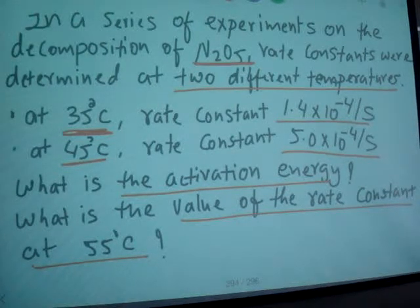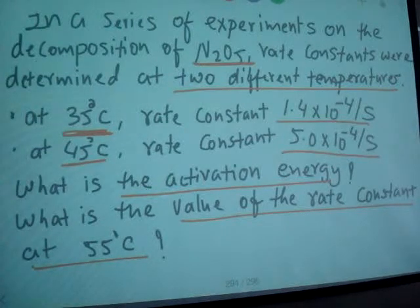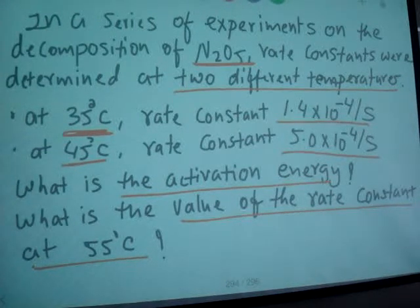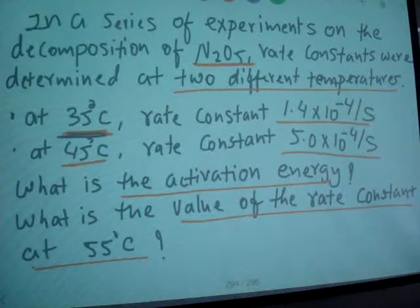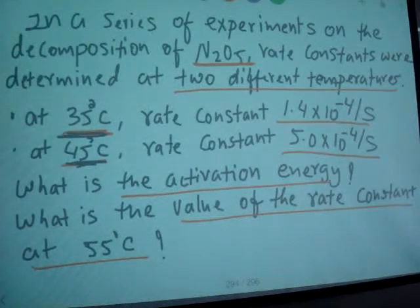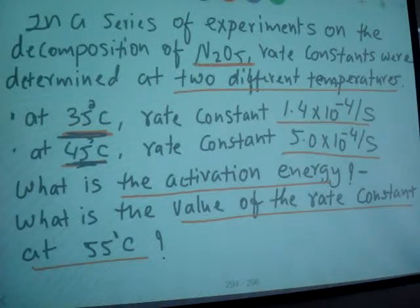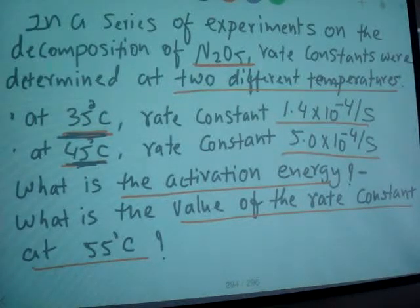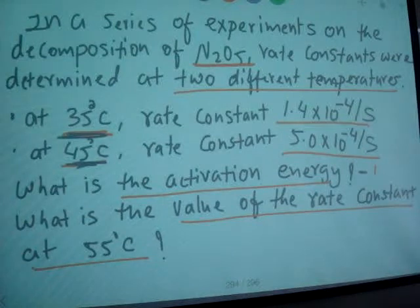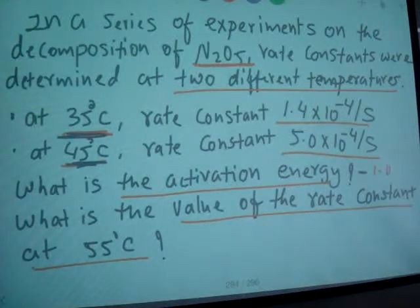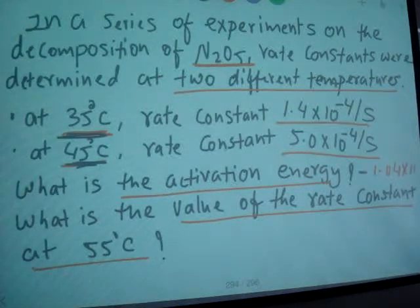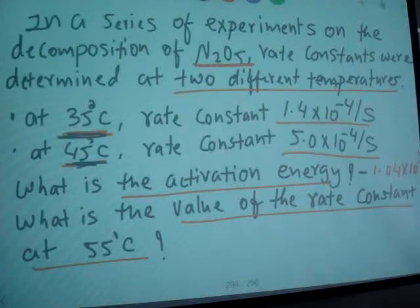decomposition of N2O5 at two different temperatures, at 35 degrees Celsius and 45 degrees Celsius, which is the rate constant, and we find activation energy, which we have 1.04 times 10 to the 5 joule per mole.